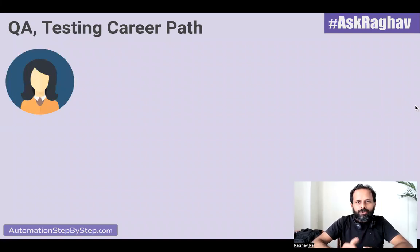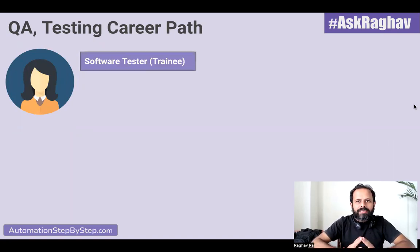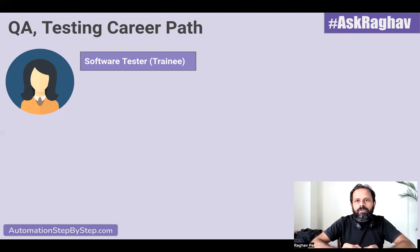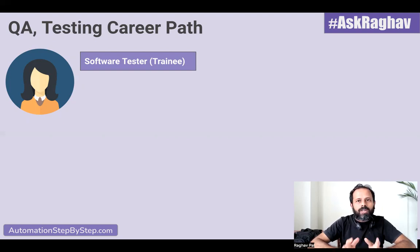I will tell you the different roles that you will have to go through in this profile in QA or testing. You will generally start as a QA trainee or a software tester trainee. As you start as a trainee, your responsibility will be to learn the skills, learn the QA process, the testing process, learn the QA fundamentals. You will have to write test cases, run test cases, see the execution process, find defects, raise defects, follow up with the defects or bugs, learn the defect tracking process, and learn the defect tracking tools or whatever tools are being used in that project or in your team.